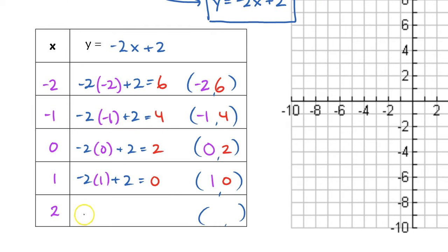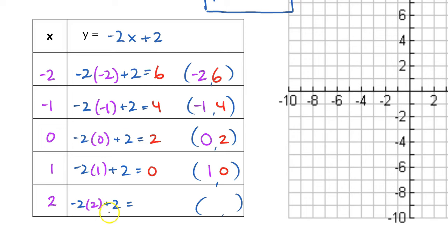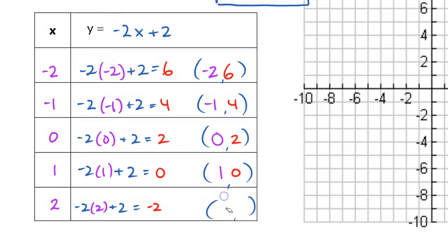Okay, last but not least, let's plug in 2. So I have negative 2, and then times 2, and then plus 2. And when I type that in my calculator, negative 2 times 2 is negative 4. Add 2, and you'll get negative 2. A lot of 2s there. All right, so the coordinate pair here, the ordered pair, is 2, negative 2.